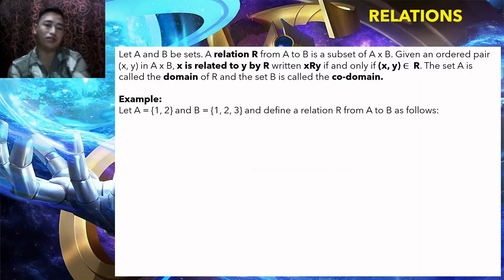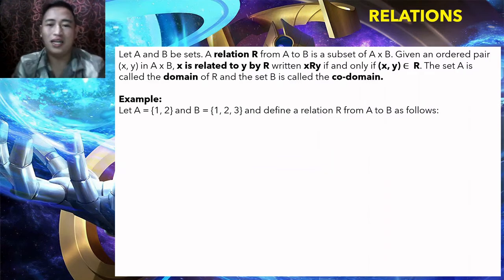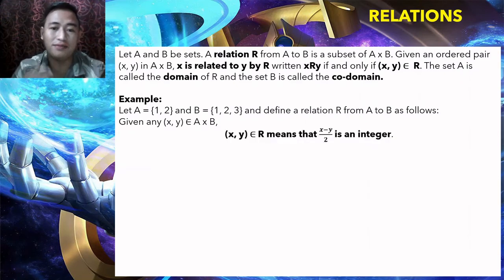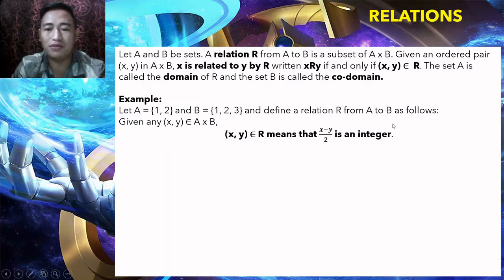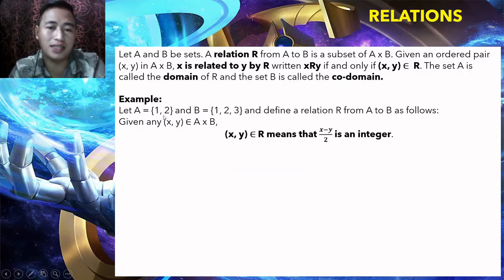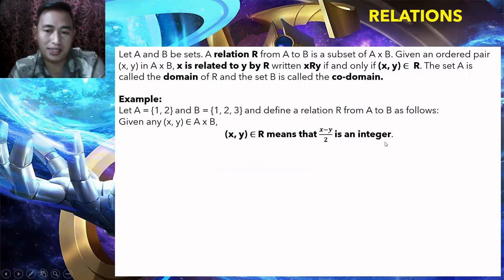Example: Let A = {1, 2} and B = {1, 2, 3}. Define a relation R from A to B as follows: given any (x, y) element in A cross B, (x, y) is in R means that (x minus y) over 2 is an integer. So a pair is in R only if (x − y)/2 is an integer; if it is not an integer, the pair is not in R.